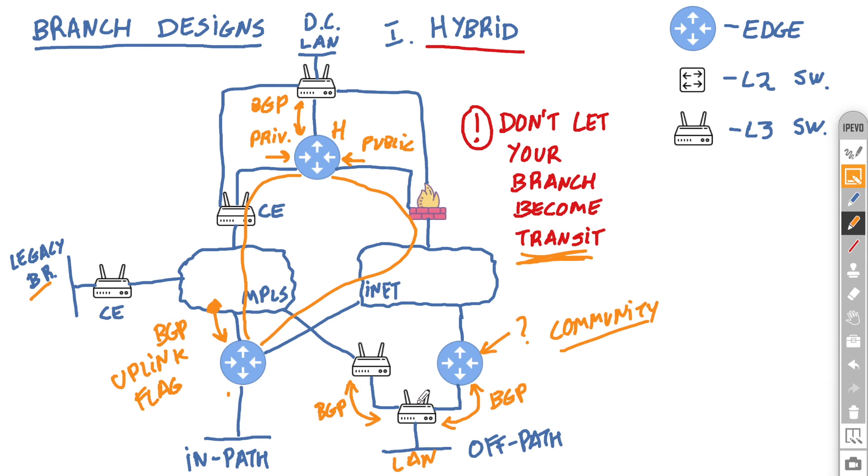So this helps the edge to differentiate between the local routes and the routes that are learned via the MPLS. So just to clarify, if you want to keep your life simple, do not allow routing to the underlay. Just use the overlays to go back to the DC and then from there use the existing routing infrastructure to reach the legacy sites. If however, you want to use the underlay as a primary way to connect to the legacy sites and the overlay to the hub as a backup, do make sure that you don't get in trouble and make your branches a transit site by using either uplink flags in case you have a direct peering with the MPLS, or with the use of community in case you already have other routers present.